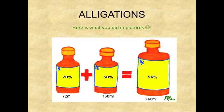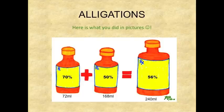In summary, you took 72 ml of the 70 percent solution and mixed it with 168 ml of the 50 percent solution to get 240 ml of the 56 percent solution. This concludes the tutorial and I hope you find it helpful. Please comment and rate the video, and if you have any questions email me at ptcb_tutor@yahoo.com or send a message through the YouTube channel.